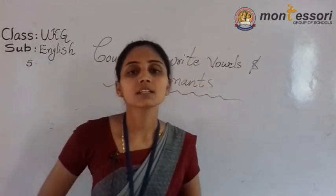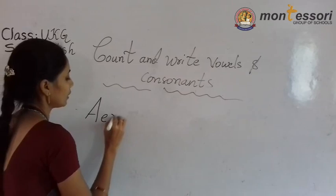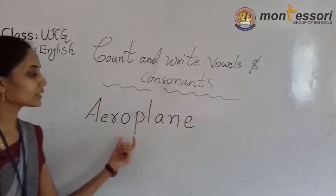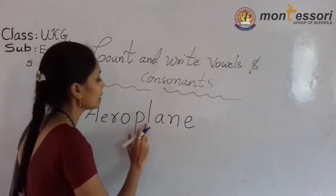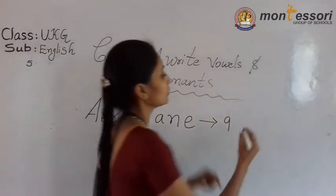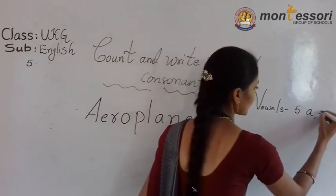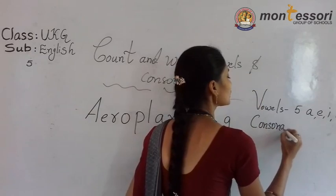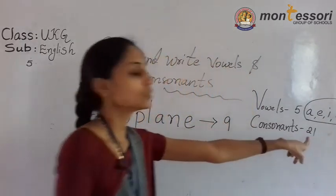What is it? You know it. Suppose: A, E, R, O, P, L, A, N, E. What is this? It is a 9-letter word. So, vowels — how many vowels are there? 5 vowels. What are they? A, E, I, O, U. Consonants — how many consonants are there? 21. If I remove those special letters, the remaining letters are consonants — 21 letters.